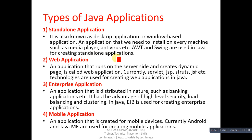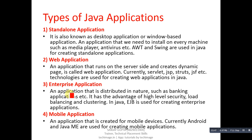The second type is web applications — an application that runs on the server side and creates dynamic pages is called a web application. Currently, Servlets, JSP, Struts, and JSF are the technologies used for creating web applications in Java. The third type is enterprise applications — a distributed application such as a banking application. It has the advantages of high-level security, load balancing, and clustering. In Java, EJB is used for creating enterprise applications.